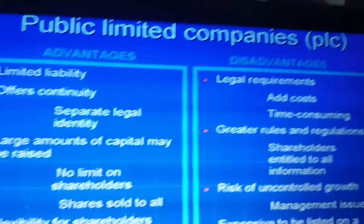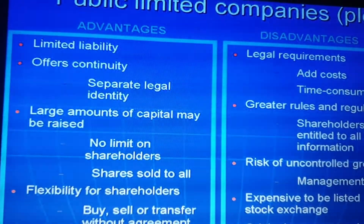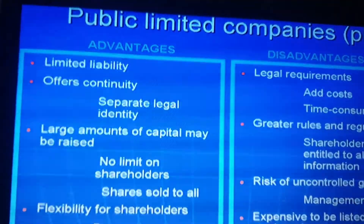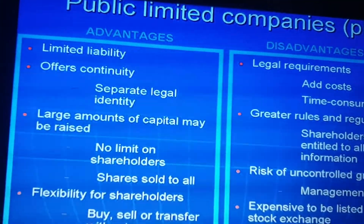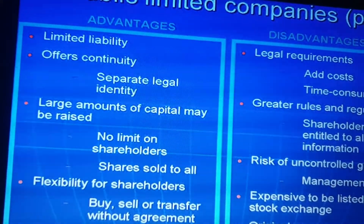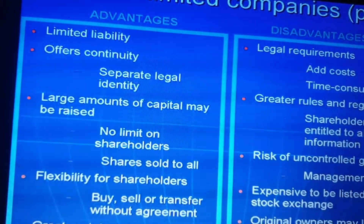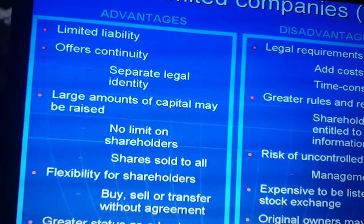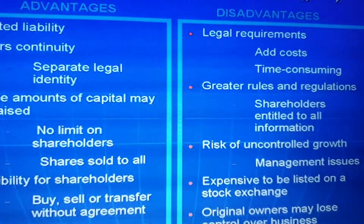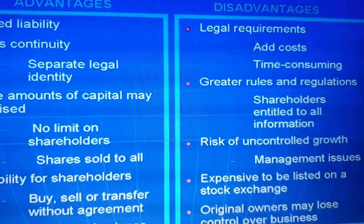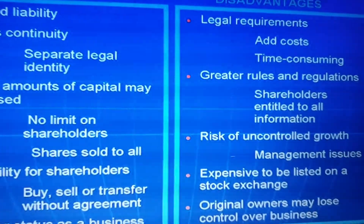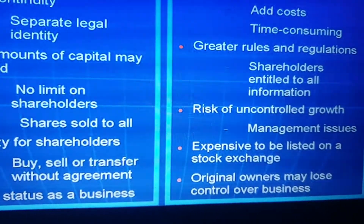Advantages of public limited company: limited liability, separate legal identity, no objection on buying, selling and transferring shares, can sell shares to the public, flexibility for shareholders, and a greater status of the business. Disadvantages are legal requirements at cost, time-consuming processes, and shareholders are entitled to information which can lead to management issues.